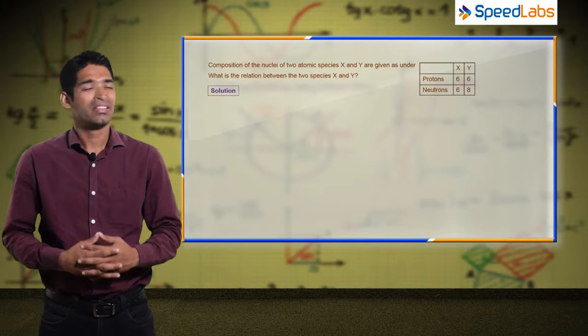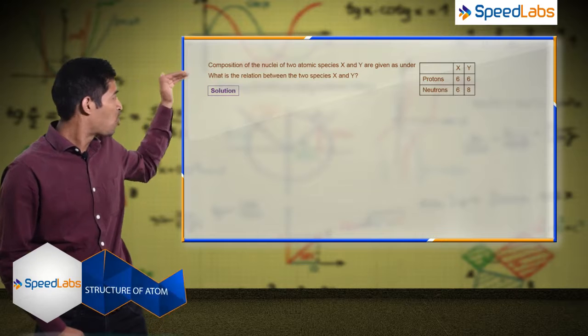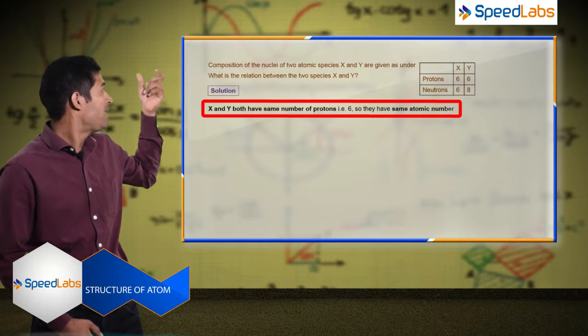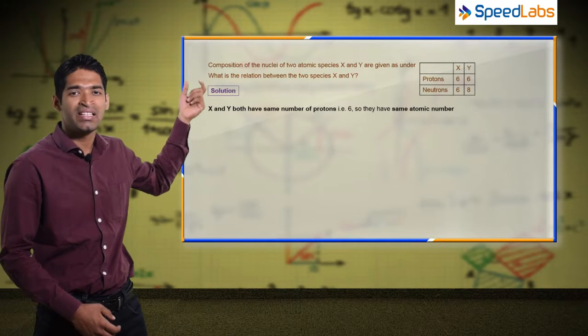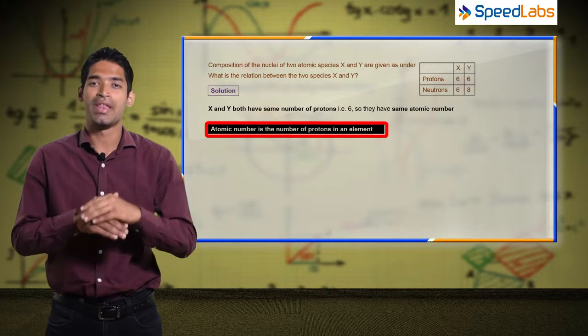As you can see, there are two different elements X and Y, and the number of protons and neutrons for X and Y are given. Now as you can observe from this table, X and Y both have six protons, so basically they have the same atomic number.